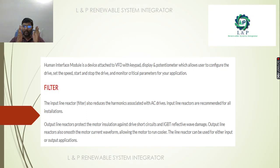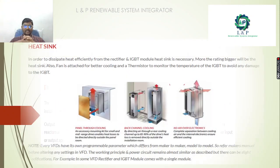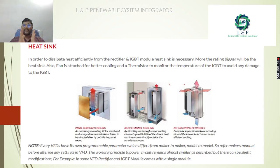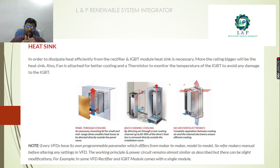Next is the filter. The input line reactor reduces the harmonics associated with the AC drives — that is the important function of these filters. In most installations, we recommend using these filters. And the heat sink — its main usage is to dissipate heat efficiently from the rectifiers and from the IGBT modules. For those two electronic components, we often use these heat sinks. We have back channel cooling, no-air-over-electronics cooling, and panel-through cooling. For cooling purposes, we normally use fans.